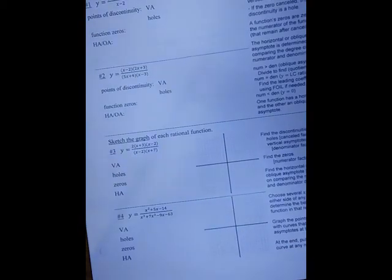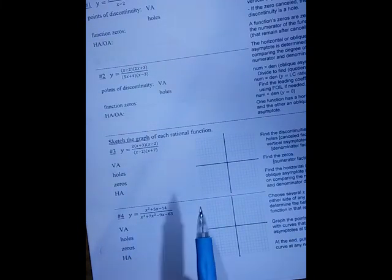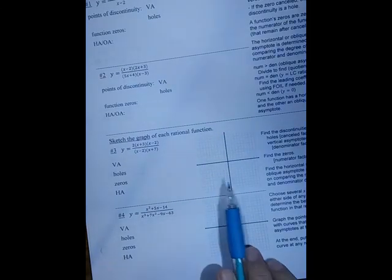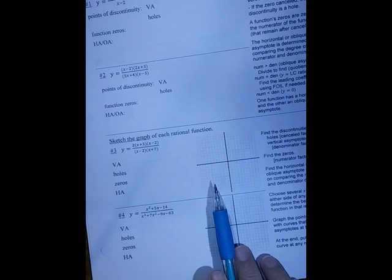Once you've figured out the asymptotes, the holes, the zeros, and the horizontal asymptote, you're going to sketch in your asymptotes. And then you will pick values and make a table of values on either side of your asymptote. In the first one, there's only one vertical asymptote. In the second one, there are two and there are three sections.